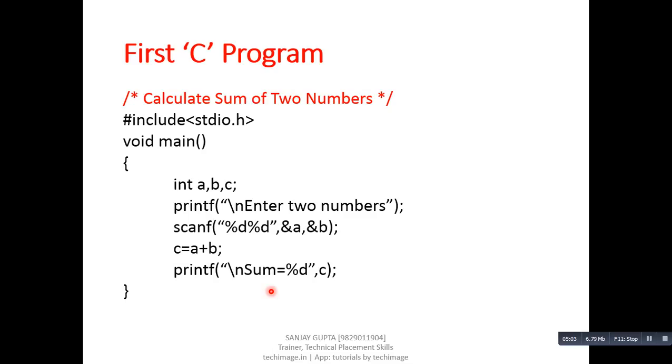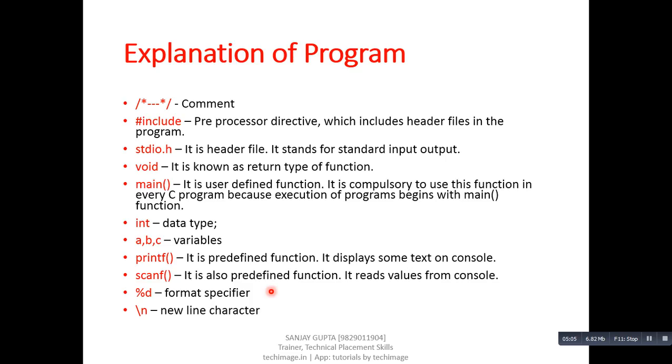Now you can also read the explanation of the program using this. Here, the first statement is comment. Now the meaning of hash include: it is a preprocessor directive which includes header files in the program. stdio.h is a header file; it stands for standard input output. Void is known as the return type of function. Main is a user-defined function. It is compulsory to use this function in every C program because execution of the program begins with the main function. Int is known as a data type.